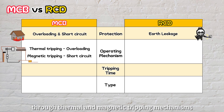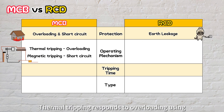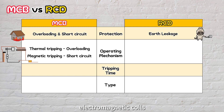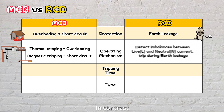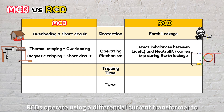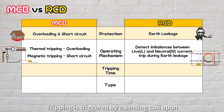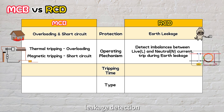MCBs function through thermal and magnetic tripping mechanisms. Thermal tripping responds to overloading using bimetallic strips, while magnetic tripping reacts to short circuits through electromagnetic coils. In contrast, RCDs operate using a differential current transformer to detect imbalances between the live and neutral currents. Tripping is triggered by a sensing coil upon leakage detection.